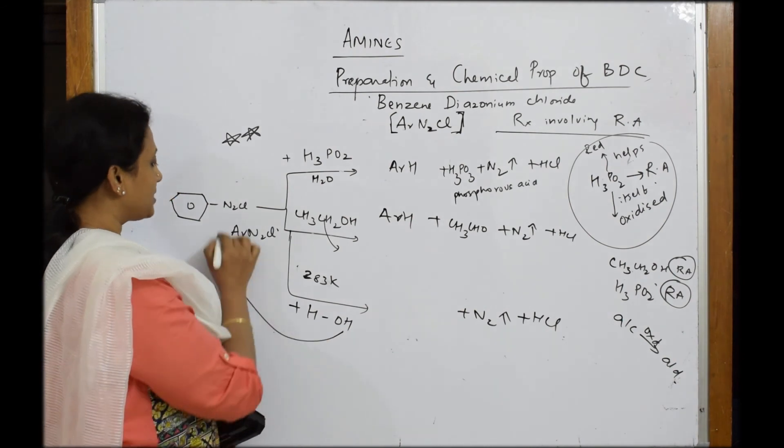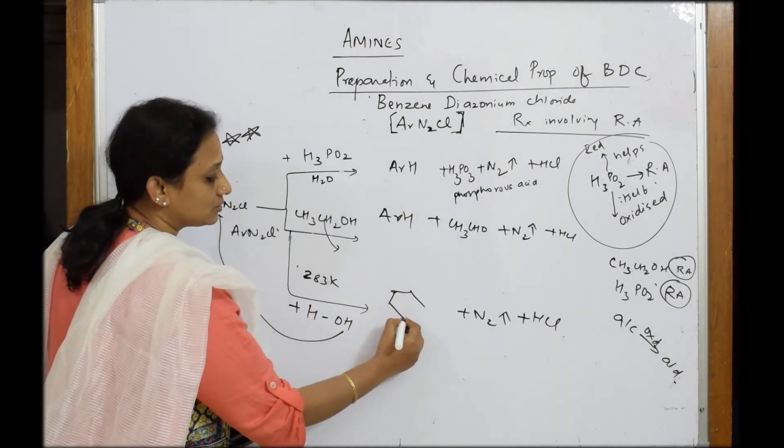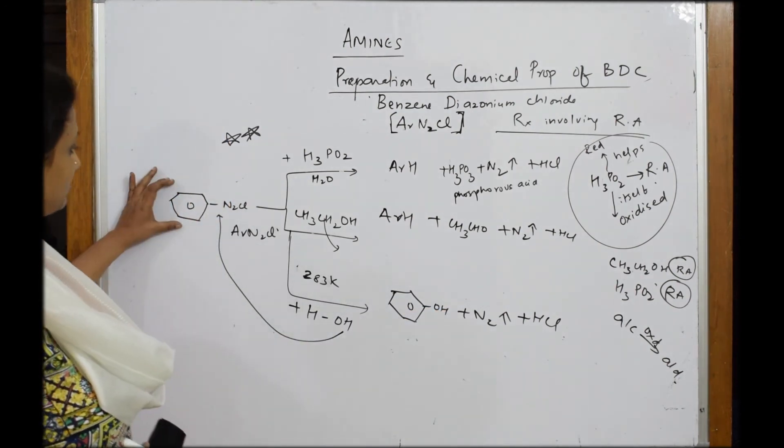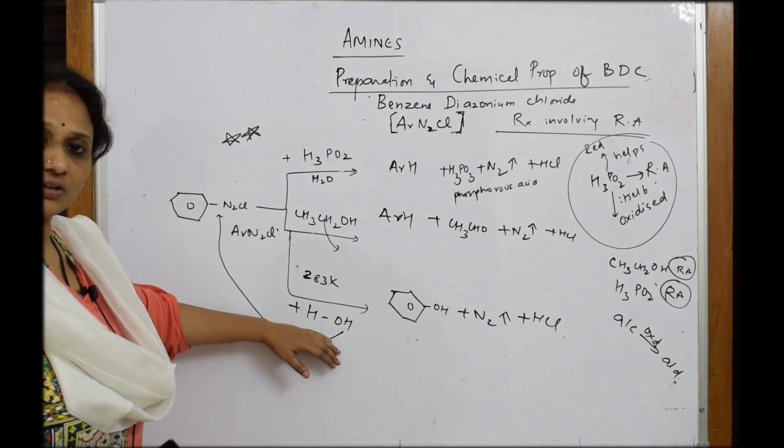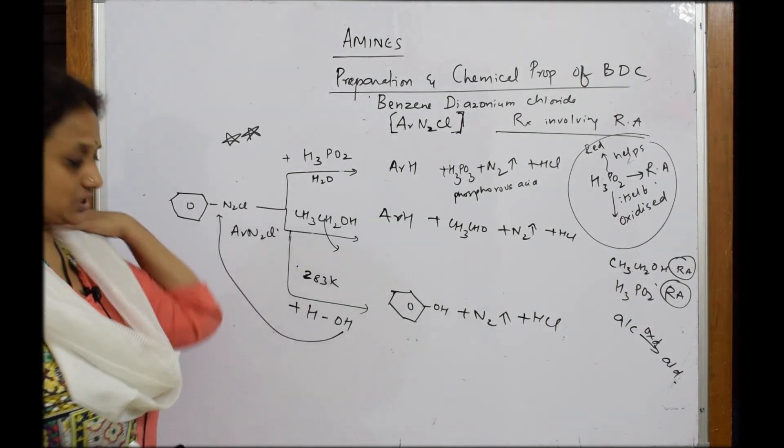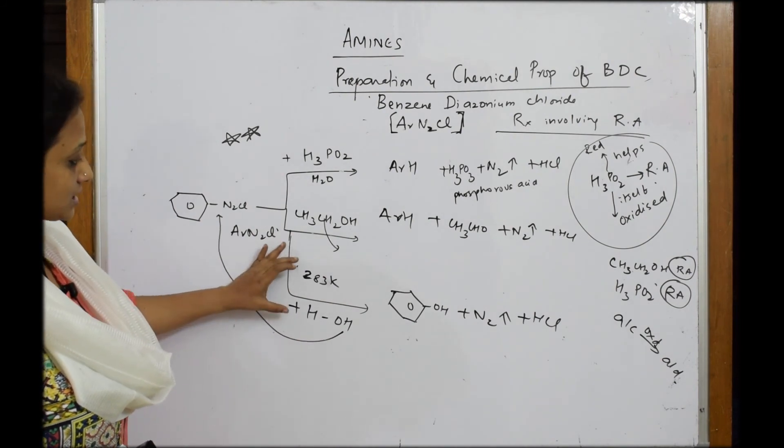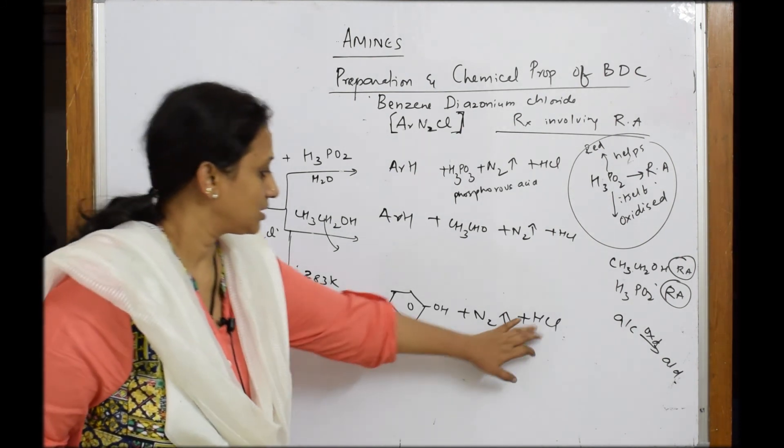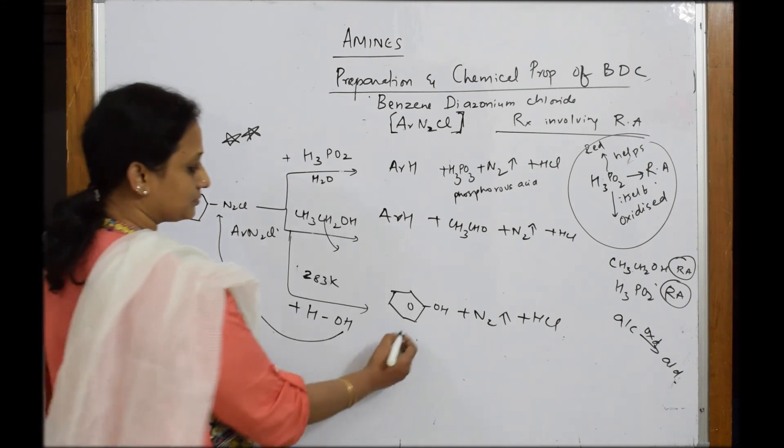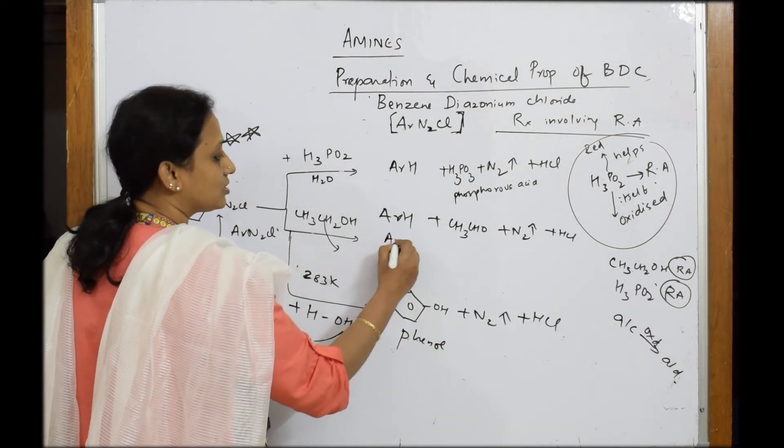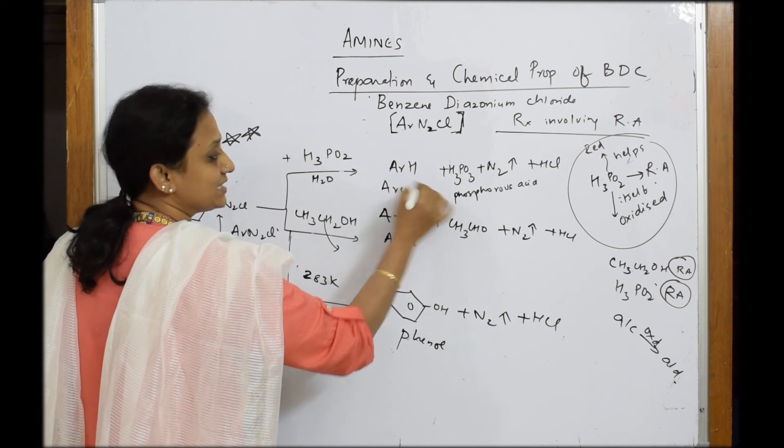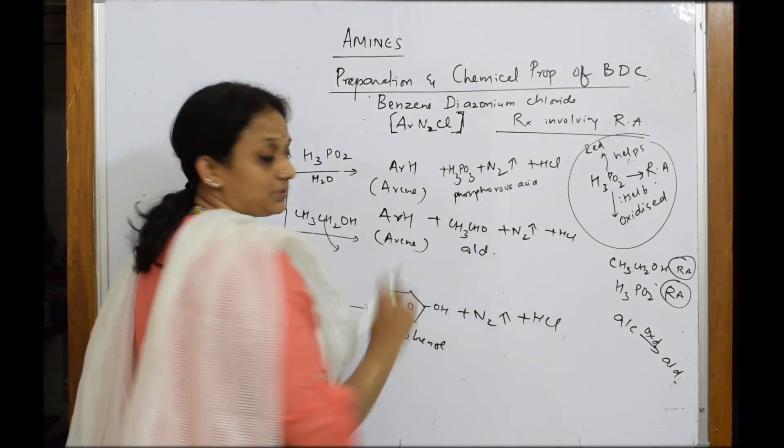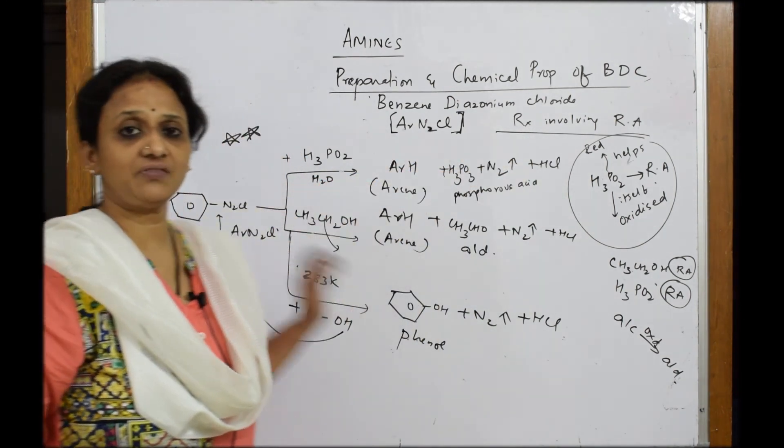Your chlorine is replaced by this OH and your HCl is out. And this OH goes and occupies its position giving me phenol. So this is one of your conversions. Simple - BDC, water. You're hydrolyzing it at, when you're increasing the temperature to 283 Kelvin. And when you're boiling it, immediately nitrogen gas escapes out. Your Cl comes out with this HCl and OH replaces that and gets phenol. This is your phenol. This is your arine. This also is your arine, your benzene ring rather. This is your aldehyde. Please remember reactions with reducing agents - very, very important reaction.